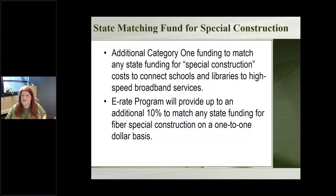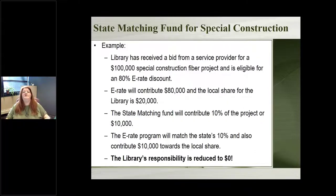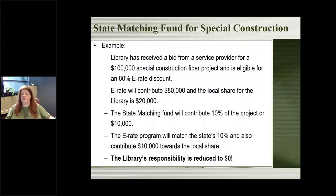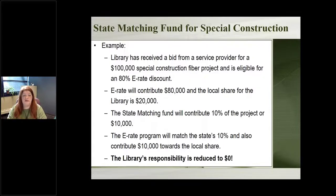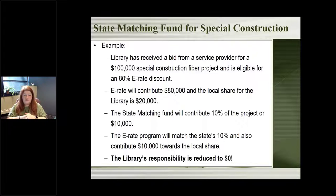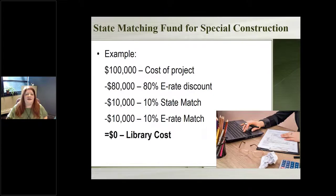Here's an example to make it clearer. Say a service provider quotes $100,000 to run fiber to your library and you have an 80% discount. E-rate covers 80%, which is $80,000, and the library is responsible for the extra $20,000. But if your state has funding to help pay for it, they can do up to 10% of what's left — another $10,000. Then E-rate says your state is providing funding and matches that, paying another $10,000. In the end, zero is the amount the library is responsible for — no cost to the library, your city, or whoever. A $100,000 project: E-rate covers $80,000, state match covers $10,000, E-rate matches another $10,000, zero to the library.